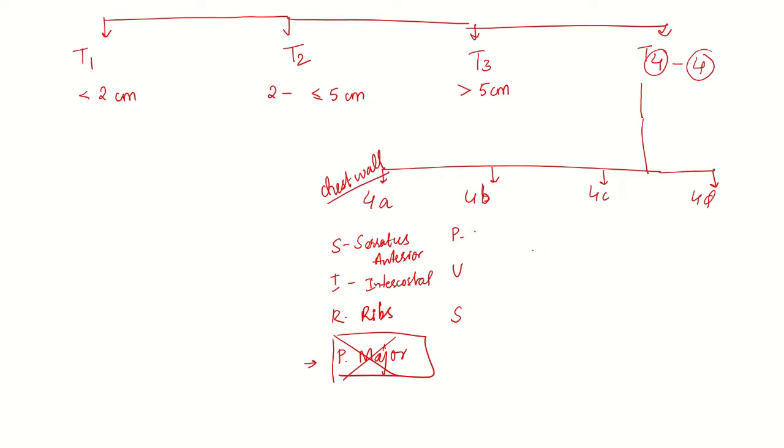4b is peau d'orange. U stands for ulceration of skin and S stands for satellite nodules. But involvement of dermis is not considered as 4b. This is the important point, this was mentioned in NCCN guidelines.